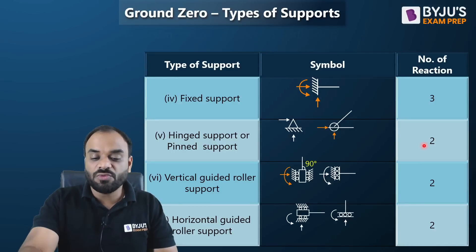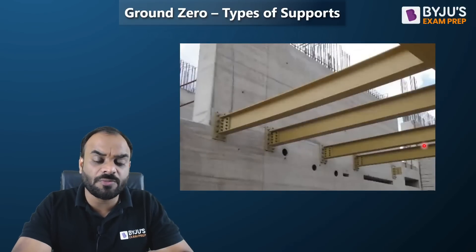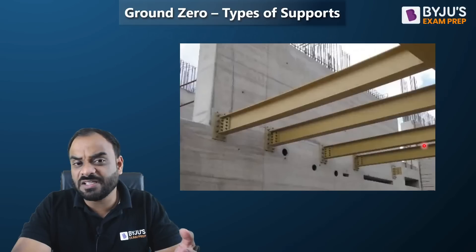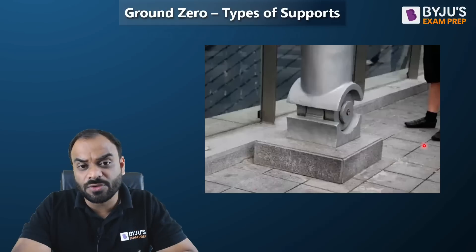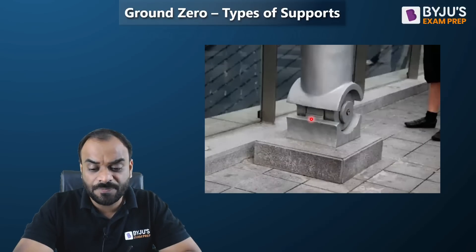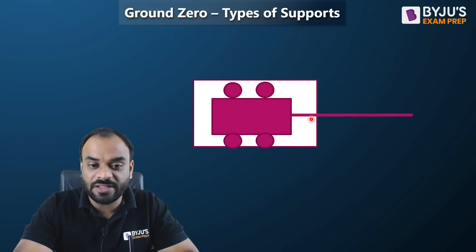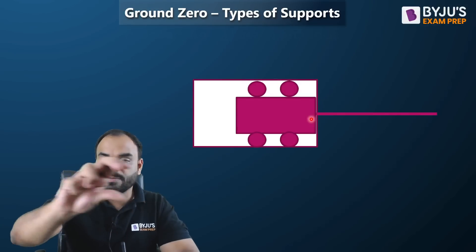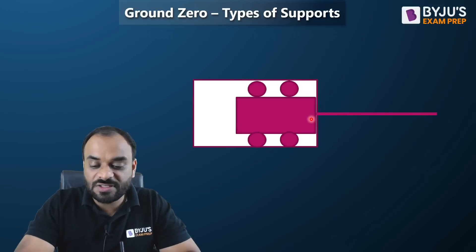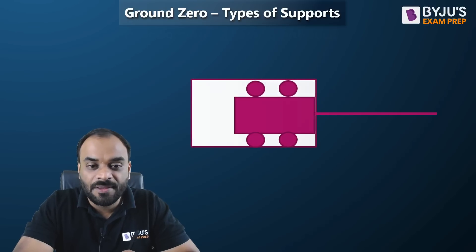Looking at examples: a fixed support has three reactions, a hinge support has two reactions — one vertical and one horizontal. A guided roller support is shown where a member slides inside a box in the horizontal direction, representing a horizontal guided roller support with two reactions.